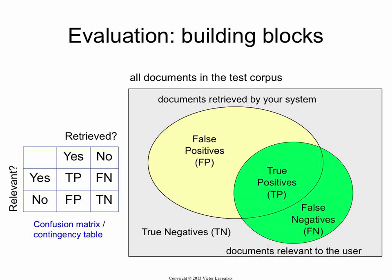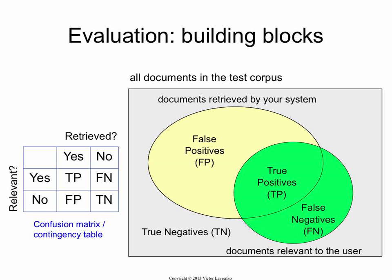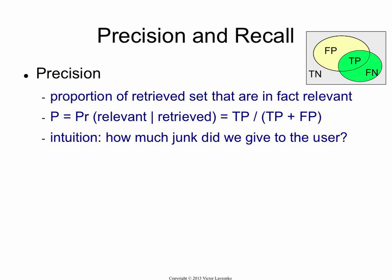You can look at it as a Venn diagram. You can also look at it as a contingency table where you have relevant and retrieved as two yes-no variables. The correct decisions are on the diagonal; the incorrect decisions are off the diagonal. So these are the basic building blocks: the true positives, false positives, false negatives, and true negatives. From these, we're going to build a bunch of measures.